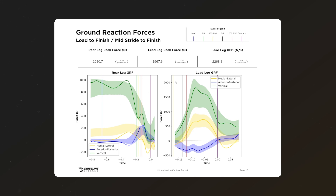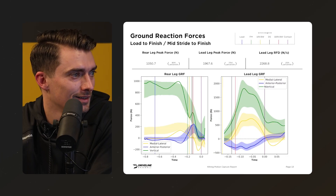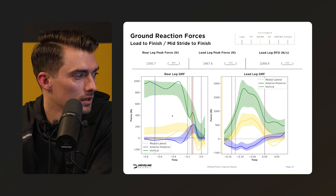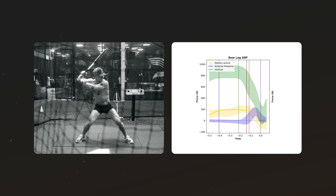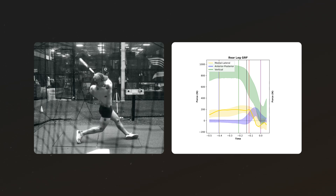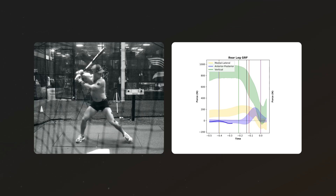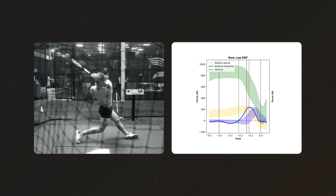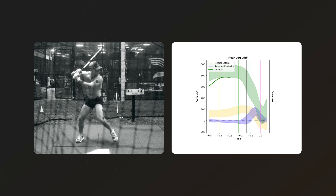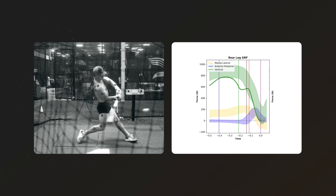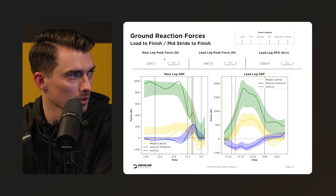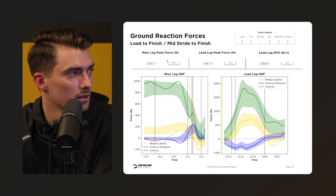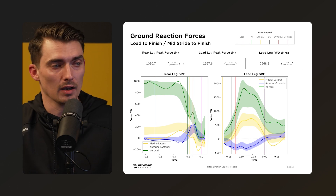The final section covers force plate data — ground reaction forces from load to finish for the rear leg, and from mid-stride to finish for the lead leg. Three force directions are tracked: medial-lateral (medial pushes toward the pitcher's mound, lateral pushes back toward the catcher), anterior-posterior (anterior toward home plate, posterior the opposite direction), and vertical (up and down). Key metrics are rear leg peak force, lead leg peak force, and lead leg rate of force development — all important for transferring energy up the chain, moving the bat fast, and hitting the ball hard.